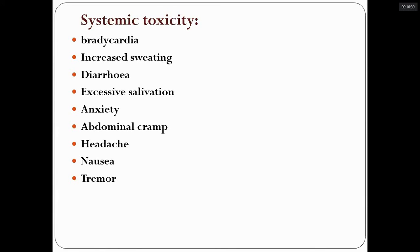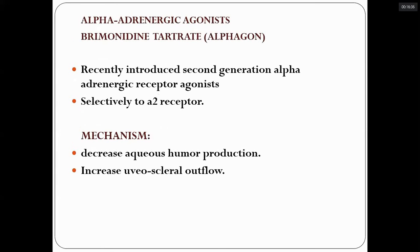Systemic toxicity of pilocarpine includes bradycardia, increased sweating, diarrhea, excessive salivation, anxiety, abdominal cramps, headache, nausea, and tremor. Some examiners also ask about systemic indications and toxicity. Brimonidine tartrate (alpha-agonist), available as Alphagan or Alphagan P, is a second-generation alpha-adrenergic receptor agonist.